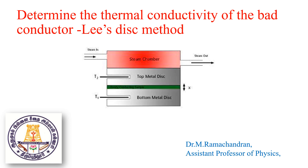The bad conductor X is inserted between the two brass discs. Thermal conductivity is defined as the total quantity of heat conducted through the material per one square meter area of cross section under unit temperature gradient — this is called the thermal conductivity of the bad conductor.